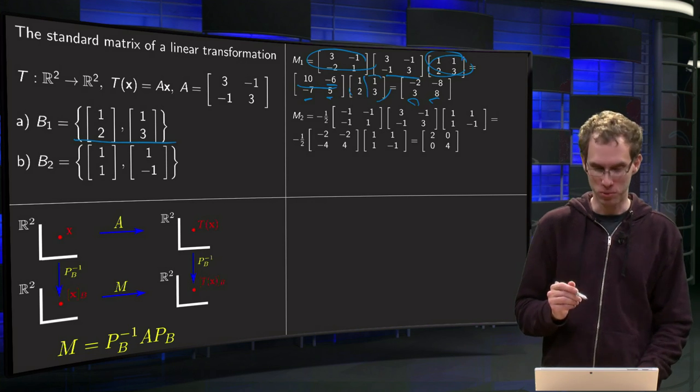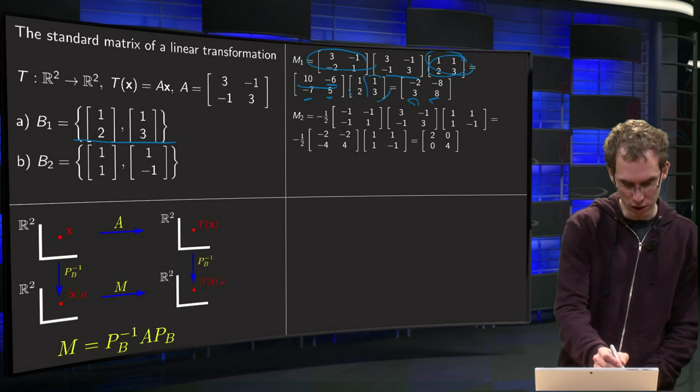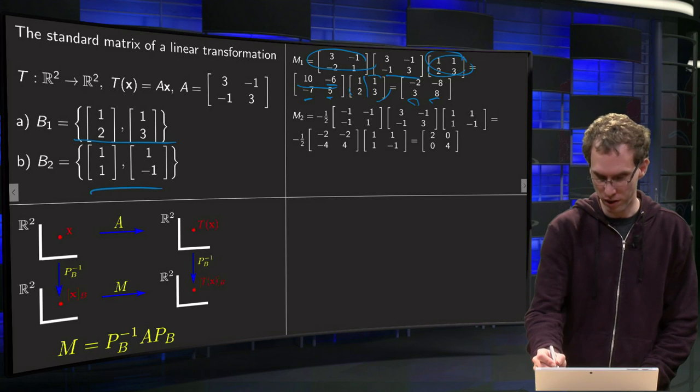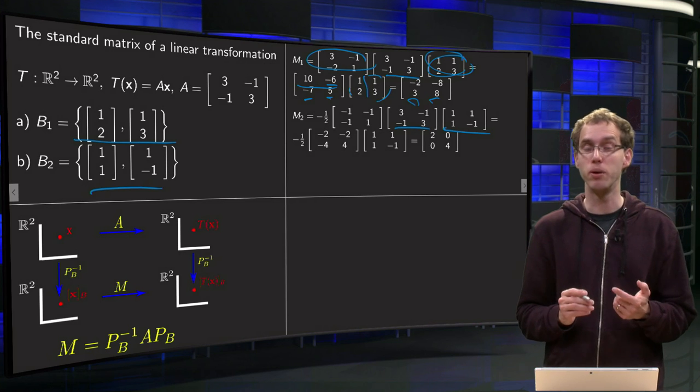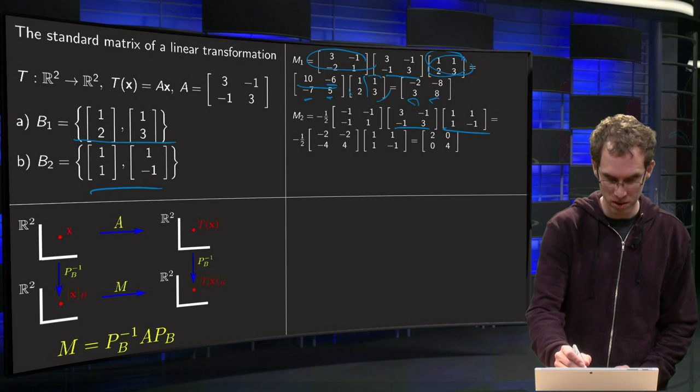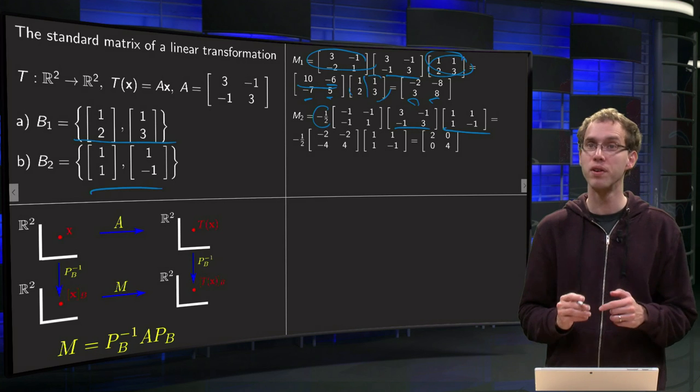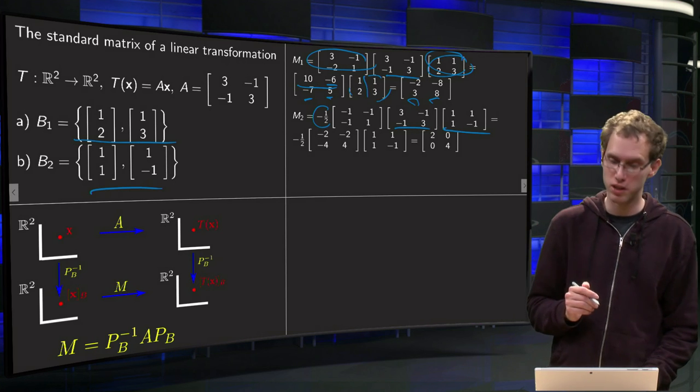Let's take another basis B2. So the [1,1], [1,-1], so here we have our PB2, our A again, and now the inverse, the determinant equals minus 1 minus 1 equals minus 2, so we have to divide by minus 1 half and compute the inverse in the same way.